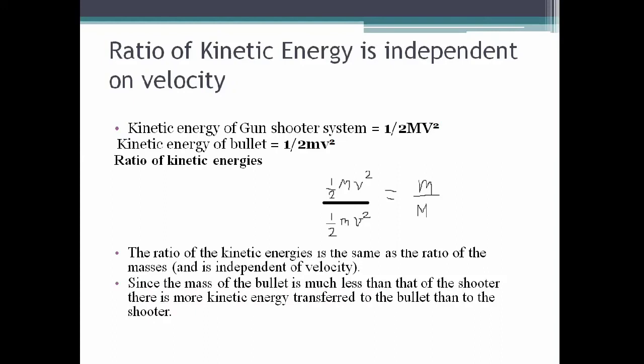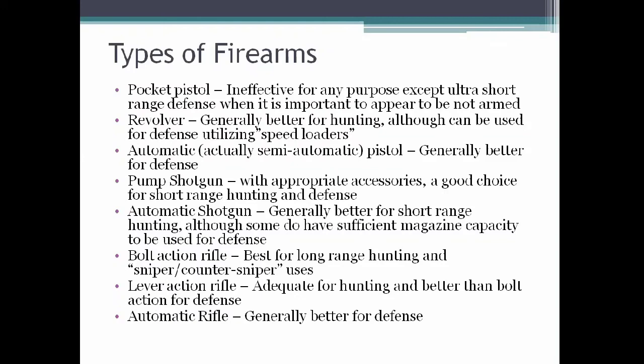Since the mass of the bullet is much less than that of the shooter, more kinetic energy is transferred to the bullet than to the shooter. There are many types of firearms; some examples include: pocket pistol, revolver, automatic pistol, semi-automatic pistol, pump shotgun, automatic shotgun, bolt-action rifle, lever-action rifle, and automatic rifle. Many types are available according to their usage and purpose.